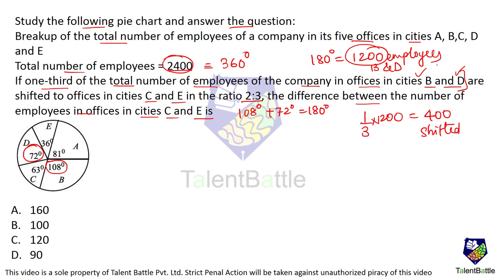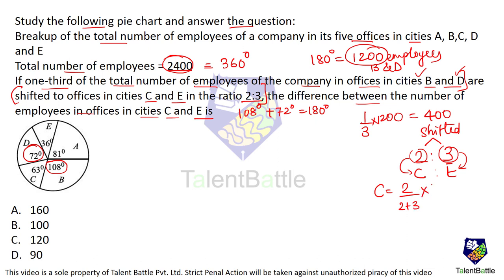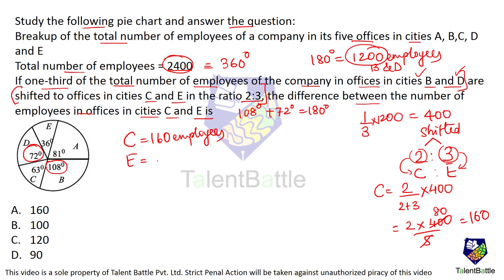These 400 employees are shifted to offices in cities C and E in the ratio 2:3. C gets 2/(2+3) × 400 = 2 × 400/5 = 160 employees. E gets 400 − 160 = 240 employees. Total shifted = 400, which checks out.